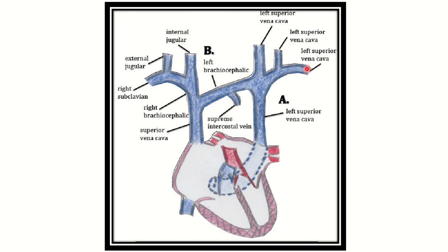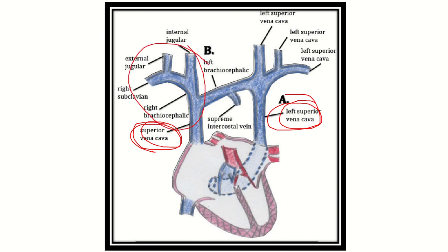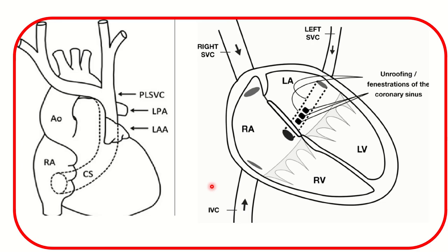Here we can see the left-sided superior vena cava, and here is the normal right-sided superior vena cava. In this patient, the right superior vena cava is absent. Usually, there are two superior venae cavae during early embryological development, after which the left-sided one is lost and the right side persists. But in this case, only the left side is present. We can see a blood vessel running posterior to the heart, lying between the atrium and ventricle, through which blood will drain into the right atrium.